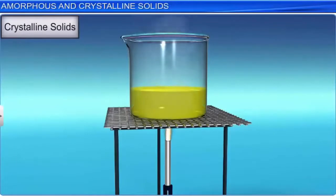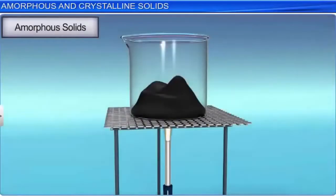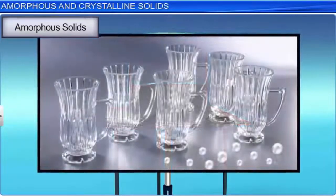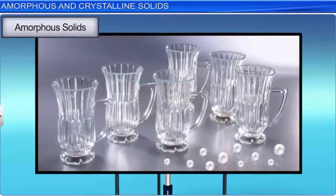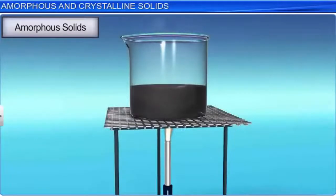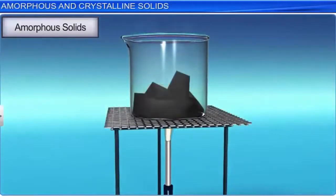Glass, rubber, and plastics are examples of amorphous solids. In many respects, these solids resemble liquids. They flow very slowly at room temperature and are regarded as supercooled liquids, in which the forces holding the molecules together are so great that the material is rigid, but there is no regularity in the structure.